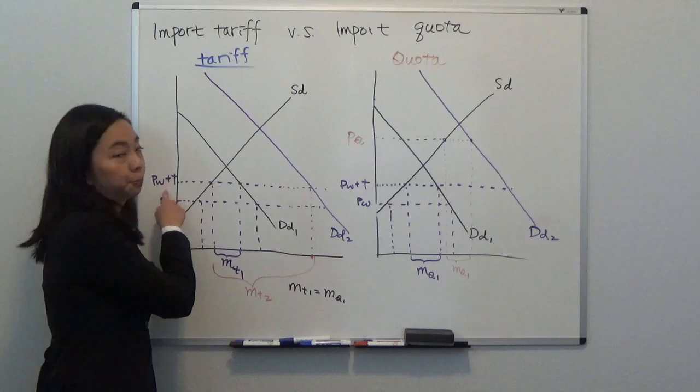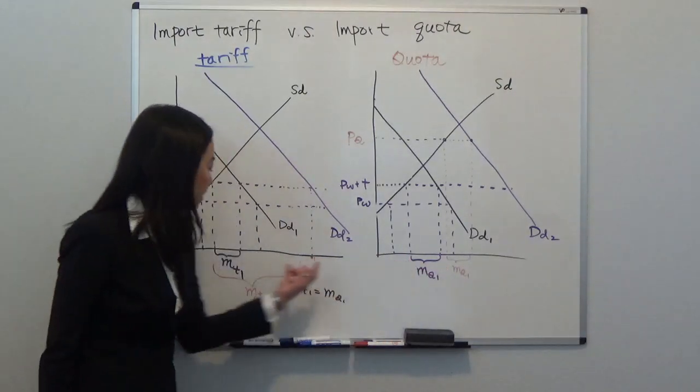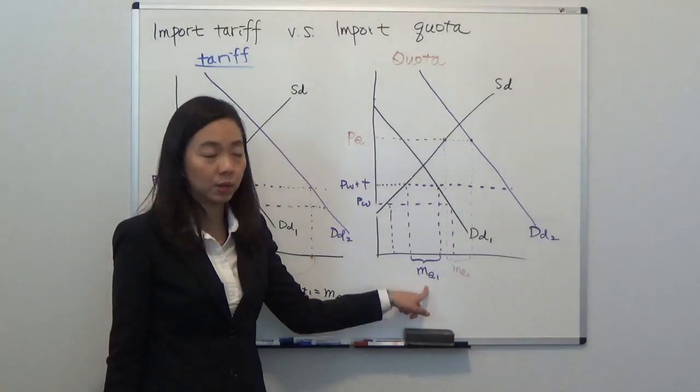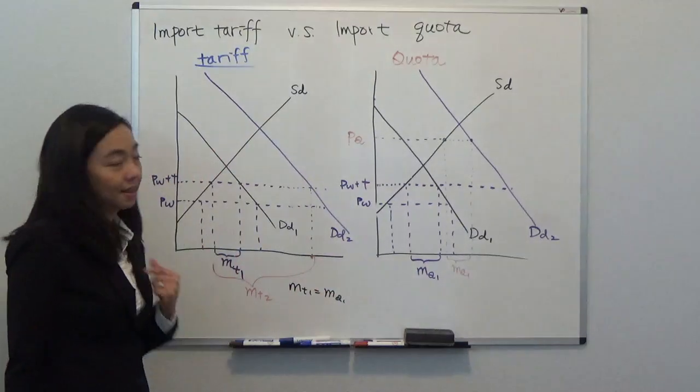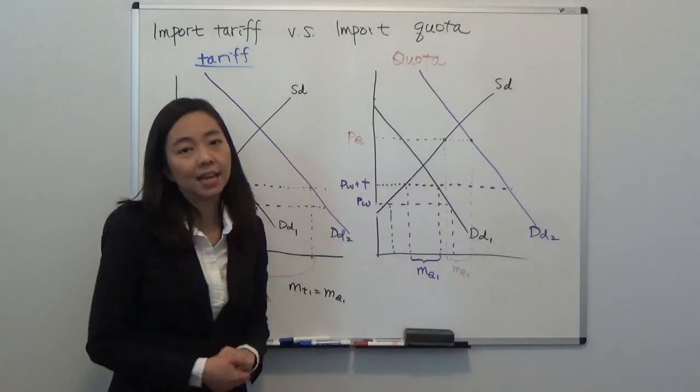We can see the initial effect was equivalent. Your MT1 is the same as MQ1, so we import the same amount and the price goes up from PW to PW+T. These are equivalent. But now suppose there's an increase in demand, so the demand goes up from DD1 to DD2.